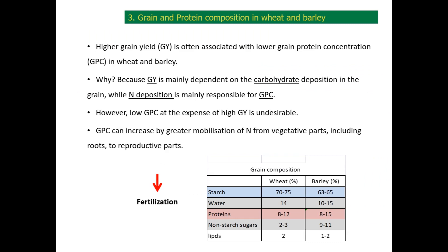In agriculture, the most important parameters to consider in wheat and barley are grain yield and grain protein concentration. There is a negative interaction between grain yield and protein content — the higher the grain yield, the lower the protein content. This is mainly due to the fact that grain yield depends on carbohydrate deposition while protein content depends on nitrogen content.